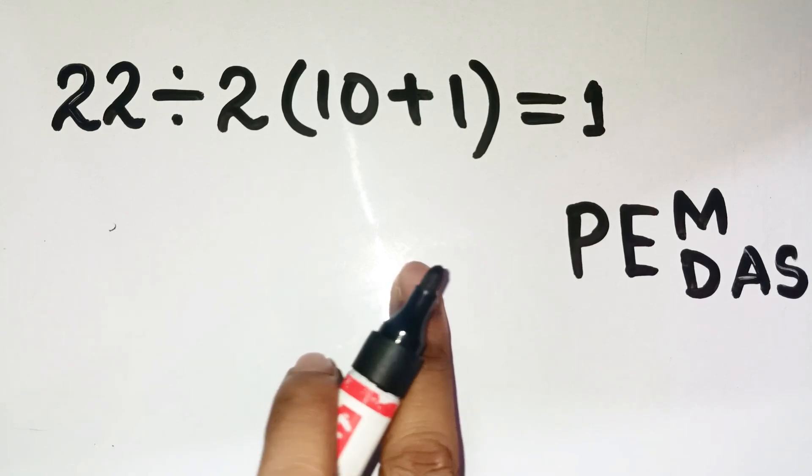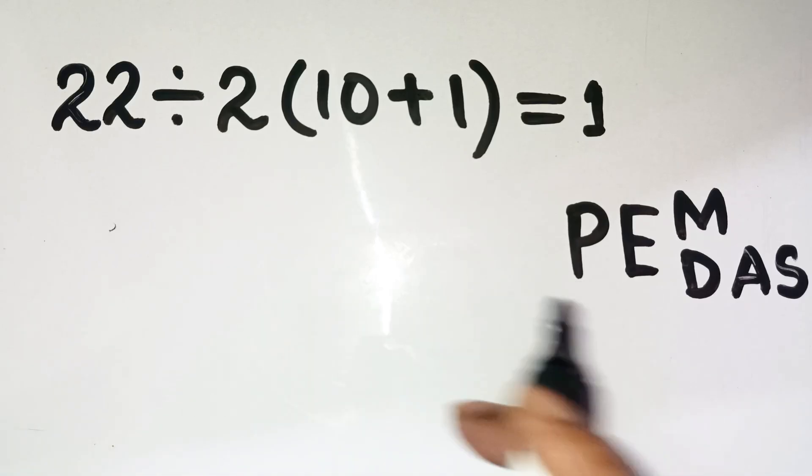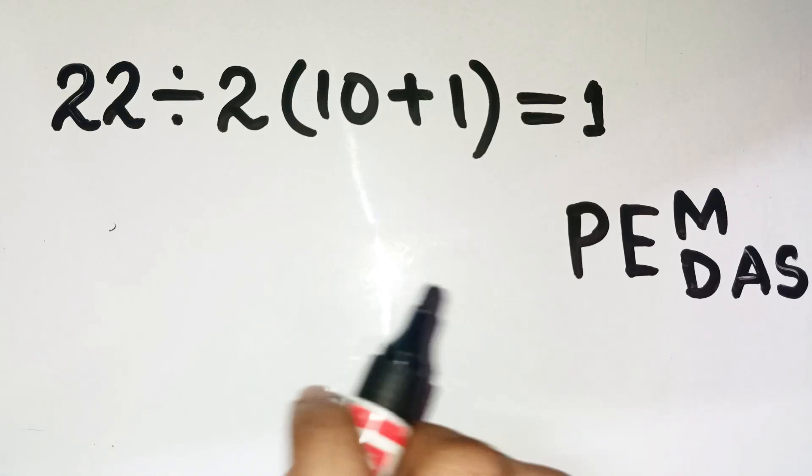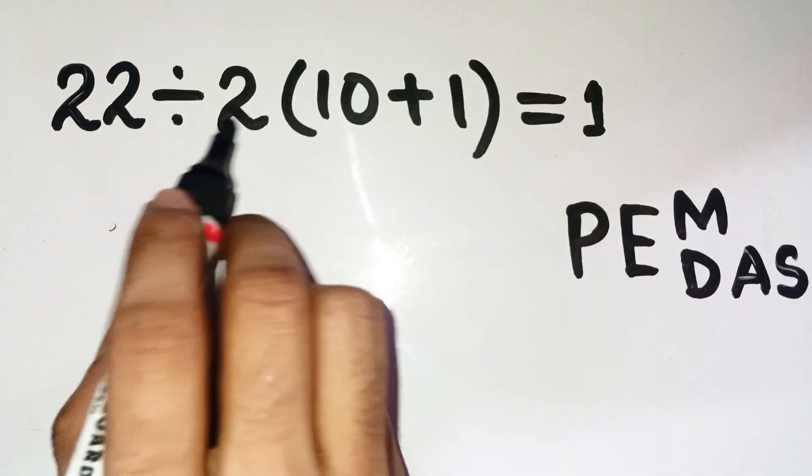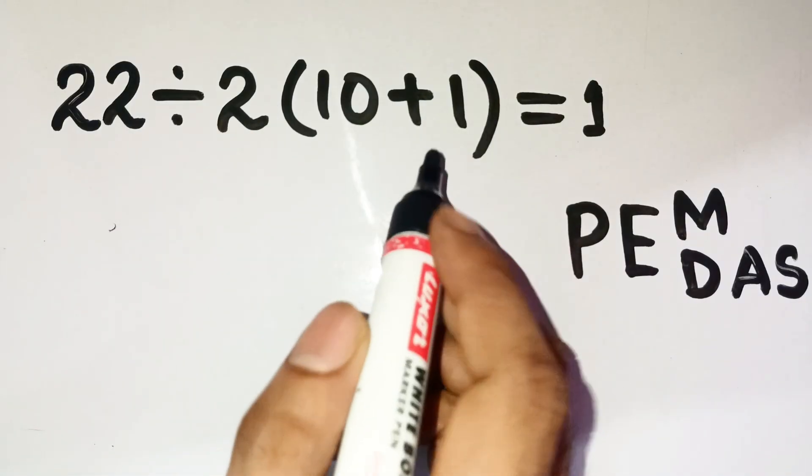Now, let's talk about how to avoid the trap. Let's slow down for a second and do this the way math wants us to. So, we're solving 22 divided by 2, open parenthesis, 10 plus 1, close parenthesis.